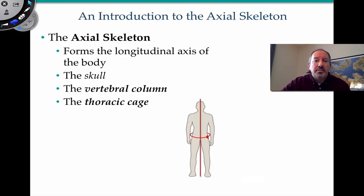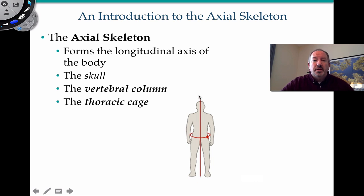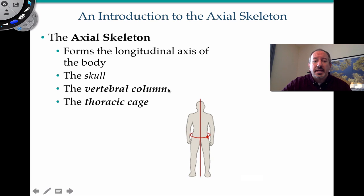I have previously made videos on the bones of the skull, both cranial and facial bones, which are also part of the axial skeleton. The axial skeleton is called axial because it comes right down the center or axis of rotation of the human body. Today we're going to look at the vertebral column and thoracic cage.